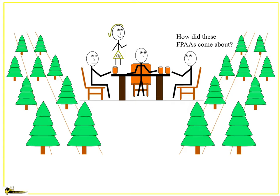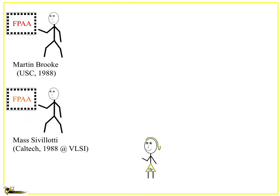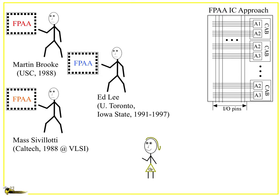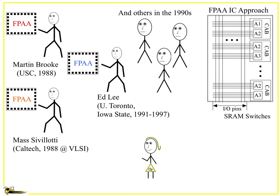So these FPAs, how did these come about? Good to always know the history. Well, it turns out that two FPA devices seemed to start off in Southern California independently. Two individuals, Martin Brook and Massibelotti, one at USC, one at Caltech, talked about these very basic FPA devices. Your basic was nothing more than a few computational blocks and routing infrastructure around it. You think, okay, that's a neat idea for some SRAMs. Then you had people like Ed Lee who did a whole bunch of additional work in the early 90s. You have IO pins, you have SRAM switches, it works pretty well.